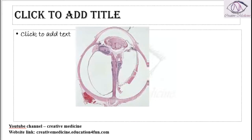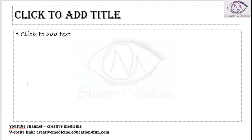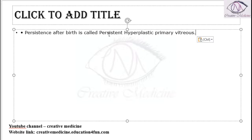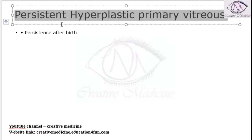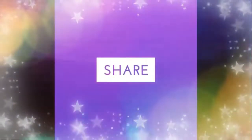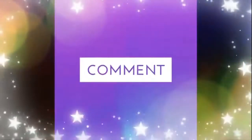The hyaloid artery completely disappears by eight months of age. However, if there is persistence of this hyaloid artery after birth, we call it Persistent Hyperplastic Primary Vitreous. In Persistent Hyperplastic Primary Vitreous, the hyaloid artery will persist even after birth.